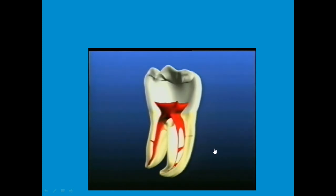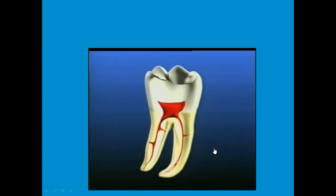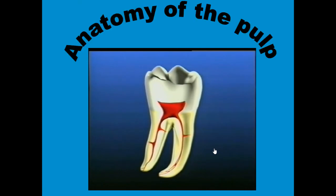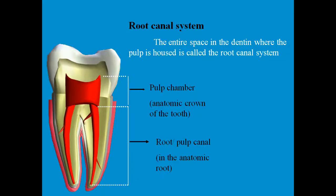Before starting endodontic treatment, we must know all the intricacies of the pulp. Let us now cover key terminologies. The root canal system is all the space within the dentine occupied by the pulp — that includes the enamel, dentine, and pulp space you learned about in first year. The root canal system is broadly divided into the pulp chamber, found in the anatomic crown, and the root canal, which is in the anatomic root.